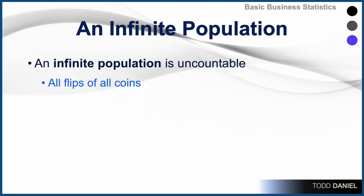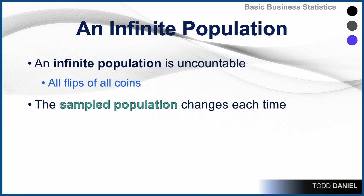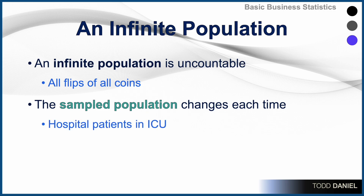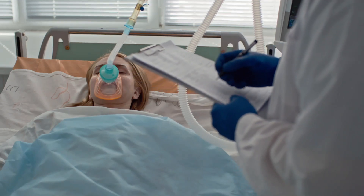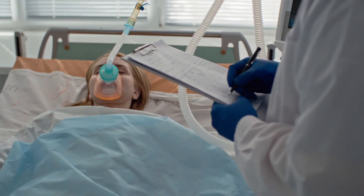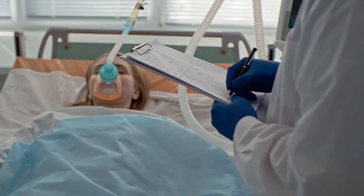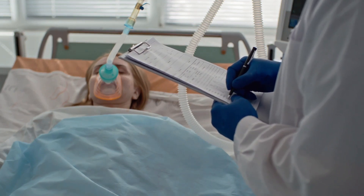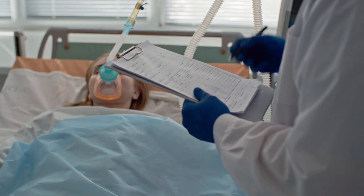An infinite population is uncountable — not flipping a coin a thousand times, but all flips of all coins that have ever been flipped. The sampled population changes each time, such as hospital patients in the intensive care unit. The patients who are in today may or may not be in tomorrow, and they're probably not going to be in next week. Certainly there will be other people who are now part of this population.